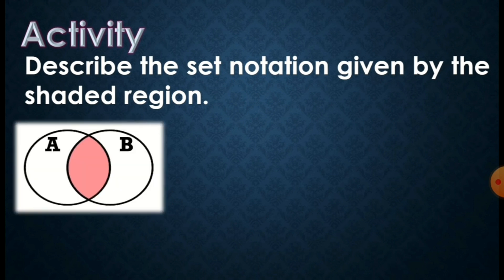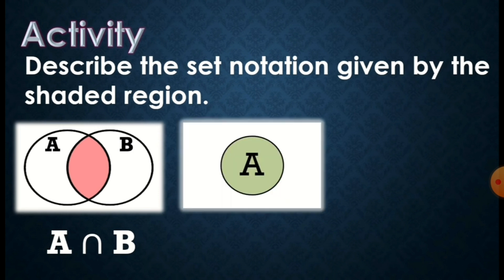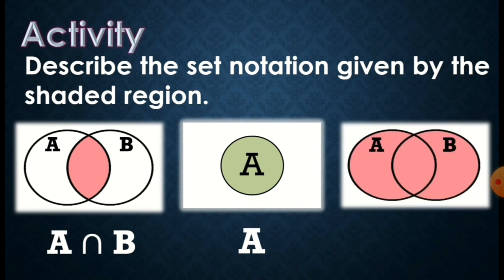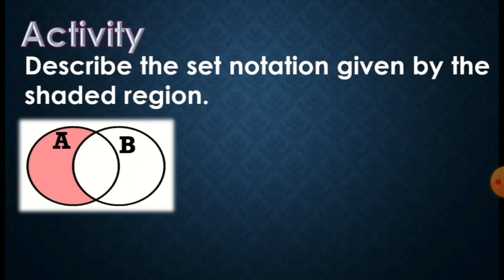For example, we have the intersection of set A and set B. Remember, when you see the Venn diagram, yung shaded nya ay nasa gitna. So when you say intersection, yung shaded ay nasa middle. Now, if the shaded is only set A, so set A lang yan. If the shaded is dalawa — set A and set B — ito ay union of set A and set B. Shaded lahat yung sets.